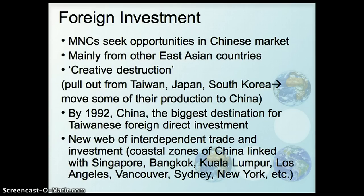You see a lot of multinational corporations coming in looking for opportunities in the Chinese market — not only to use the area for production, but as China's middle class expands and more people are doing waged work and are able to buy commodities, corporations want to sell to this huge Chinese middle class market. A lot of investment is from other East Asian countries. Below we see some of the new web of trade interdependencies. A lot of this growth is focused on the coastal areas of China, linked with other areas around the Pacific — including Singapore, Bangkok, Kuala Lumpur, Los Angeles, and Vancouver.